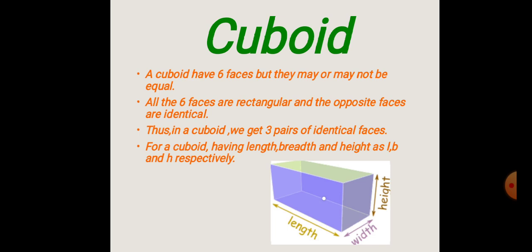A cuboid has 6 faces, but they may or may not be equal. All 6 faces are rectangular, and the opposite faces are identical. Thus in a cuboid, we get 3 pairs of identical faces: top and bottom, front and back, and the two side faces.